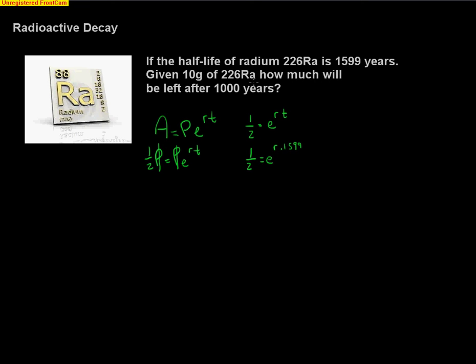To get the r times 1599 to come down, we'll take the natural log of both sides. I have the natural log of e to the r times 1599.